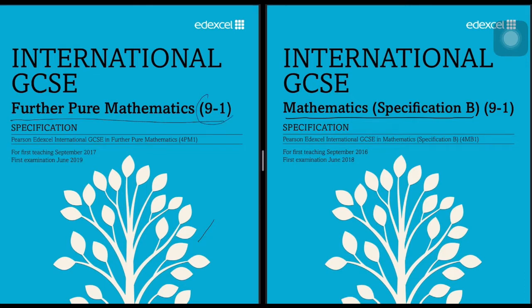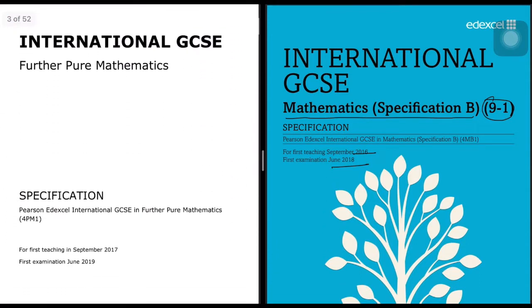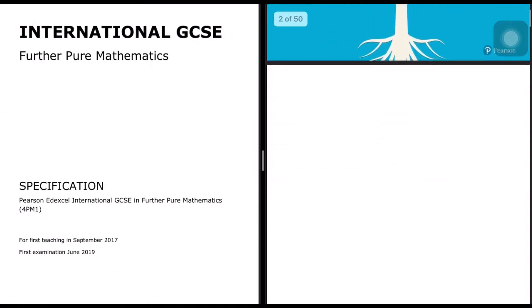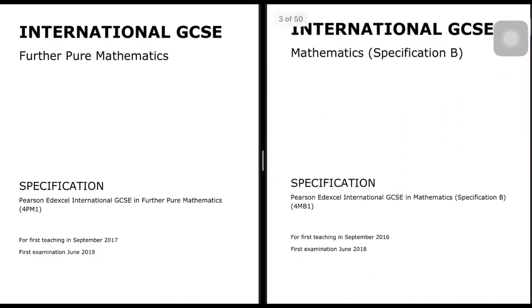Both use the new graded system, nine to one. The syllabus for Further Pure Mathematics started with first teaching in 2017 and first examination in 2019. Mathematics Specification B started first teaching in 2016 and first examination in June 2018. These are both new syllabuses.